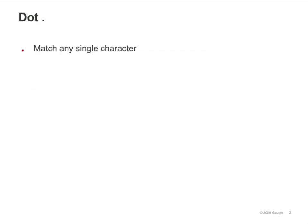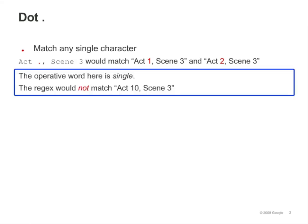Use the dot as a wildcard to match any single character. The operative word here is single, as the regex would not match Act 10, Scene 3. The dot only allows one character, and the number 10 contains two characters, a 1 and a 0. How would you write a regular expression that would match Act 10, Scene 3?